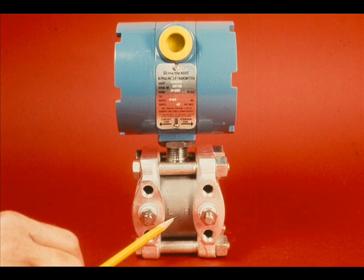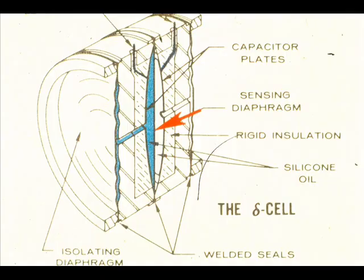The variable capacitance sensing element is located approximately midway between the high and low pressure ends of the differential pressure chamber. This is a cutaway view of the Rosemount Delta cell. Note the sensing diaphragm — it is a stretched spring element that deflects in response to differential pressure.